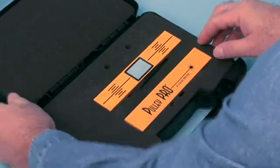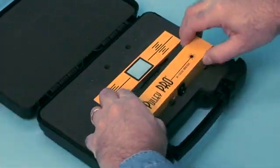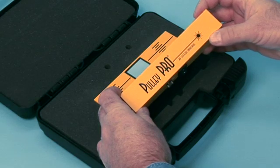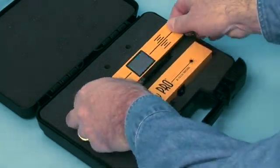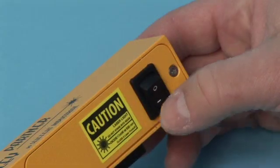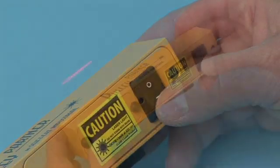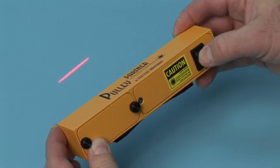Open the Pulley Pro or Pulley Partner carrying case and remove the two compact and durable units that compose the alignment system: the laser transmitter and the reflector. Turn on the laser by switching the laser unit on using the rocker switch located on the back of the transmitter.